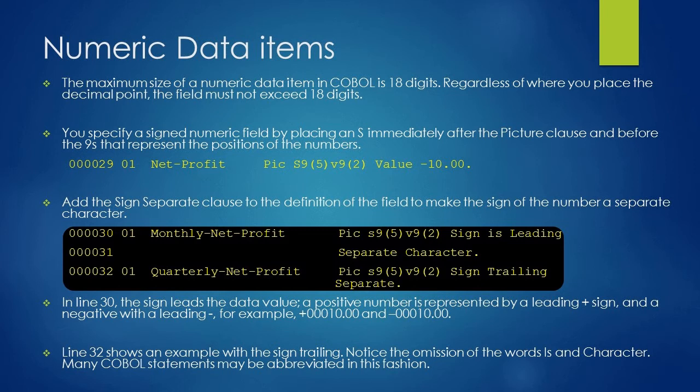When Sign Separate is used, the sign takes up a position of storage. In line 30, the sign leads the data value. A positive number is represented by a leading plus sign and a negative with a leading minus.